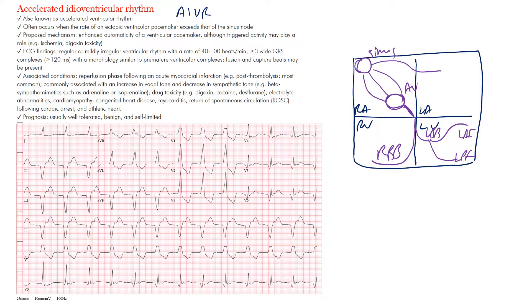In a sinus rhythm, the impulse originates at the sinus node. In a junctional rhythm, it originates from the AV nodal region. With ventricular rhythms, the impulse actually comes from outside of the conduction system — from within the ventricles. One ectopic focus spreads the rhythm throughout the whole ventricle and may even propagate retrogradely up to the atrium.